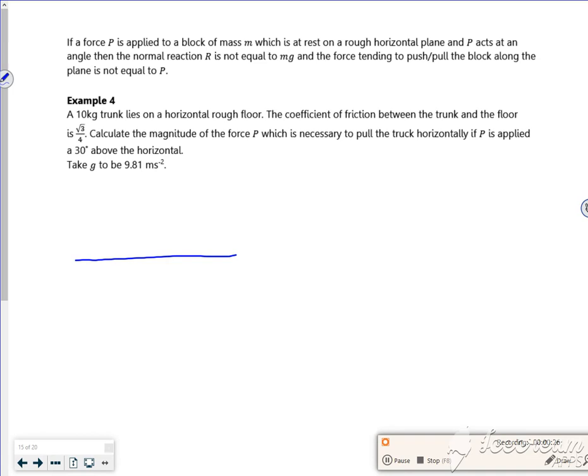Right, so let's draw a picture. So here's my trunk, it weighs 10kg so I've got 10g acting down. I've got a normal reaction acting up. I've got my friction here. Now the P is going at 30 degrees above the horizontal. So if you think about these components, I've got P cos 30 and I've got P sin 30 there and P cos 30 here.